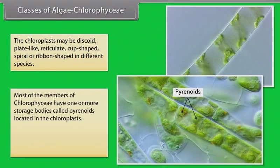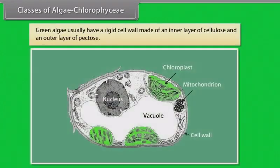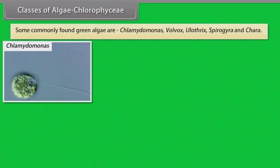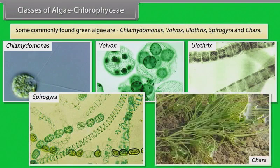Most of the members of Chlorophyceae have one or more storage bodies called pyrenoids located in the chloroplasts. Pyrenoids contain protein besides starch. Some algae may store food in the form of oil droplets. Green algae usually have a rigid cell wall made of an inner layer of cellulose and an outer layer of pectose. Some commonly found green algae are chlamydomonas, volvox, ulothrix, spirogyra and chara.